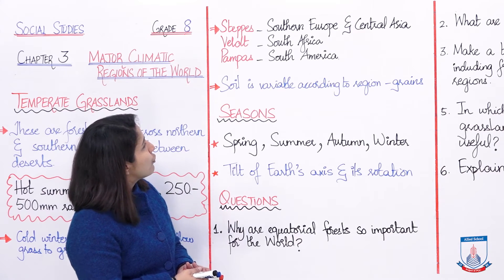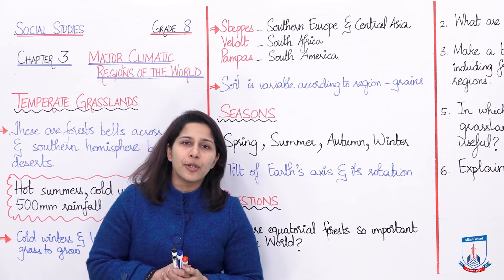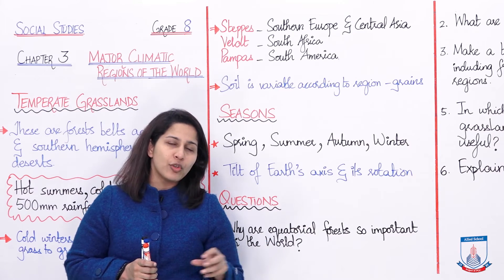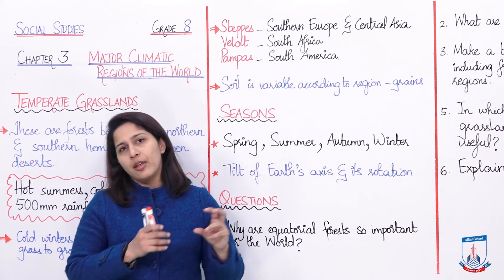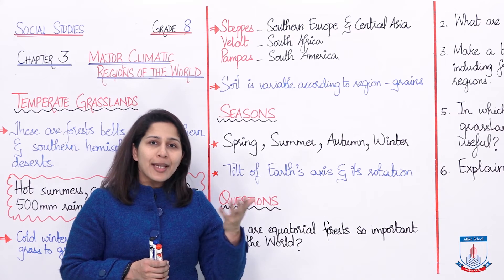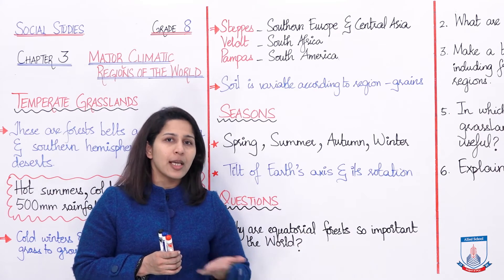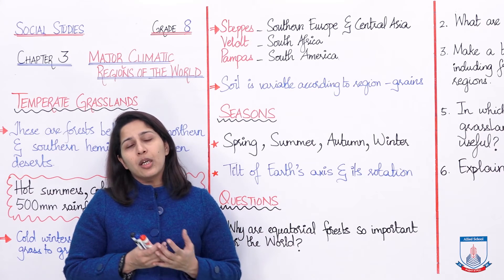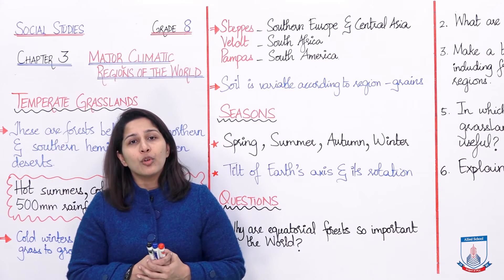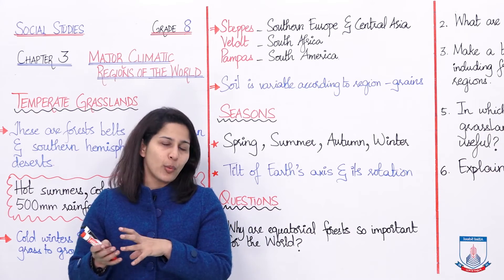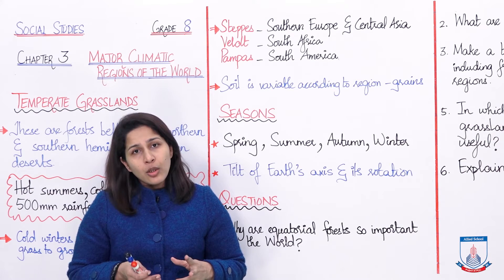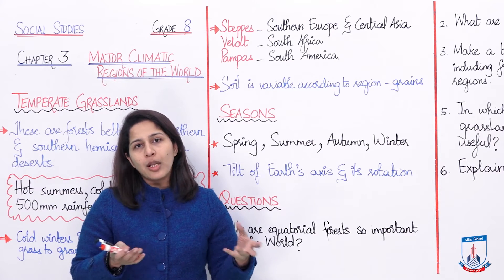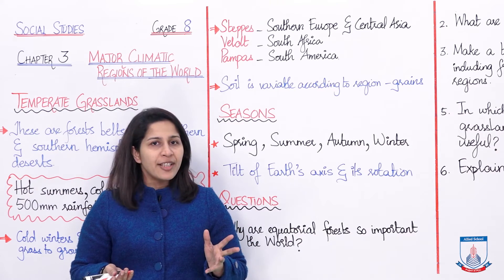Soil is variable according to region. The soil of temperate grasslands varies a lot. If it's near the equatorial region and the temperature is hot and there is wind blowing, the soil can be rich. Rich soil means grains like wheat and maize can grow there. These are the small grains which can grow in temperate grasslands with rich soil. Where the soil is not rich, because of low rainfall and very cold winters, only small grass plants are growing and no more grains can be grown there.